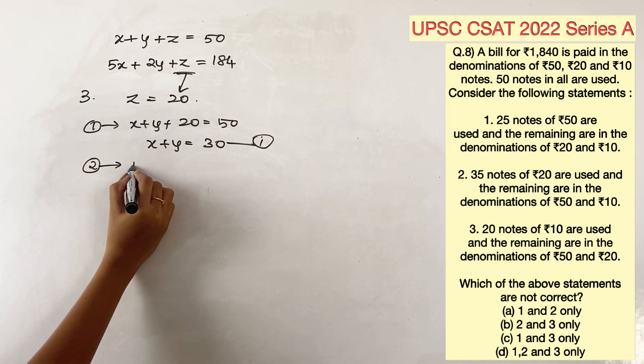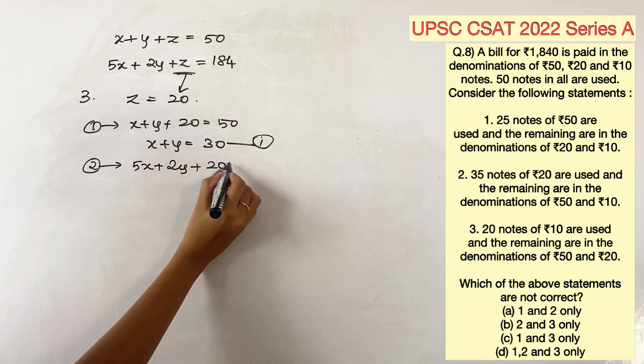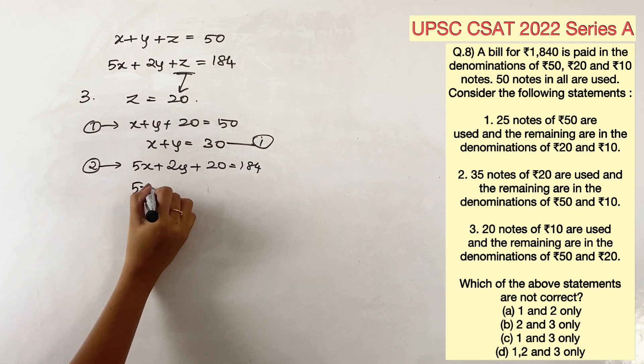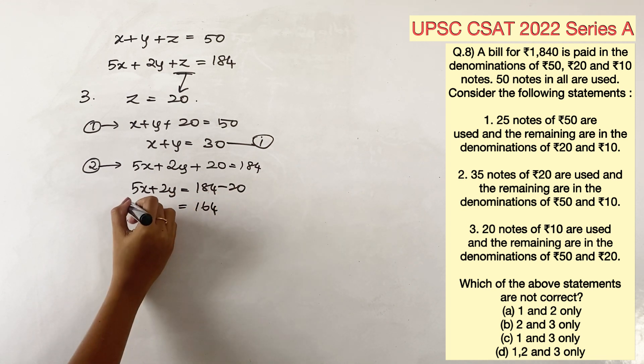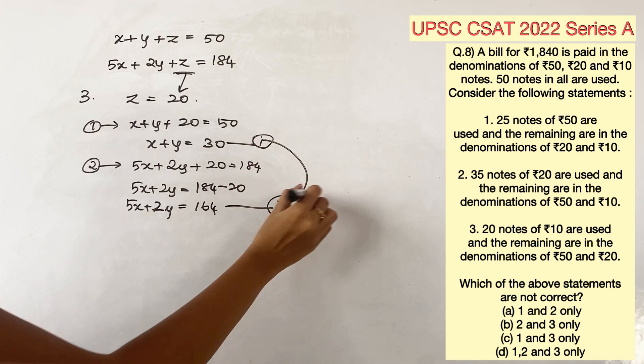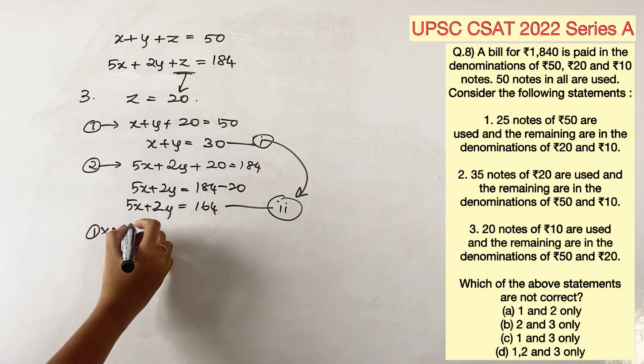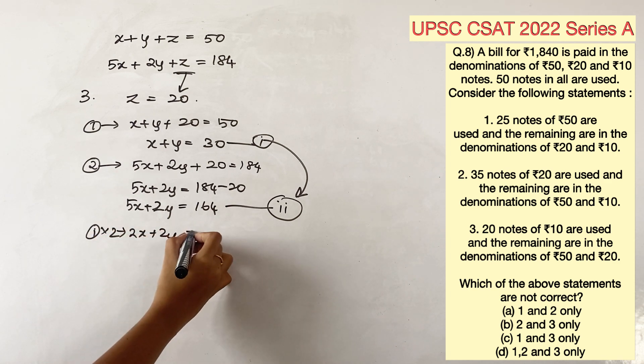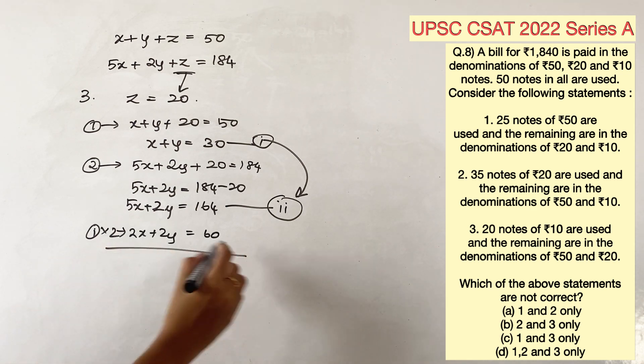The second equation would become 5x plus 2y plus 20 is equal to 184. Then, 5x plus 2y is equal to 184 minus 20. 5x plus 2y is equal to 164. Solving equations 1 and 2, let's multiply the first equation with 2, so that we will get 2x plus 2y is equal to 60.